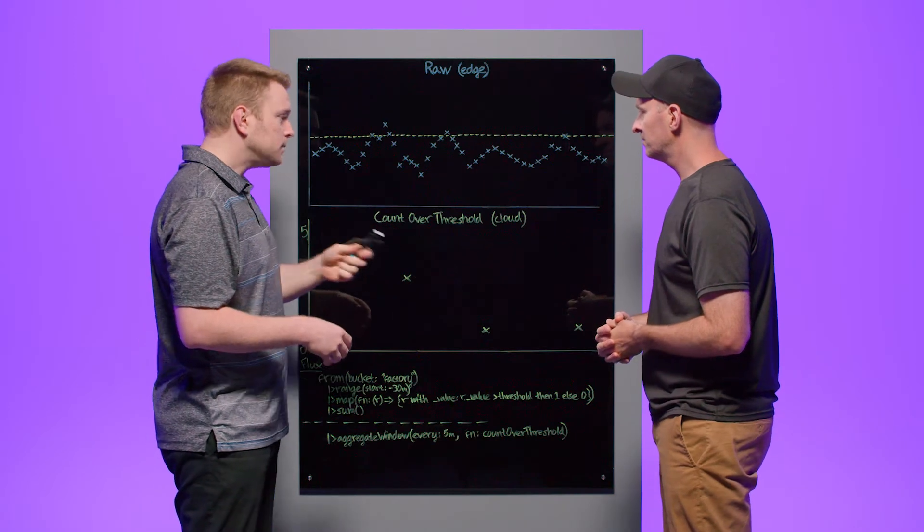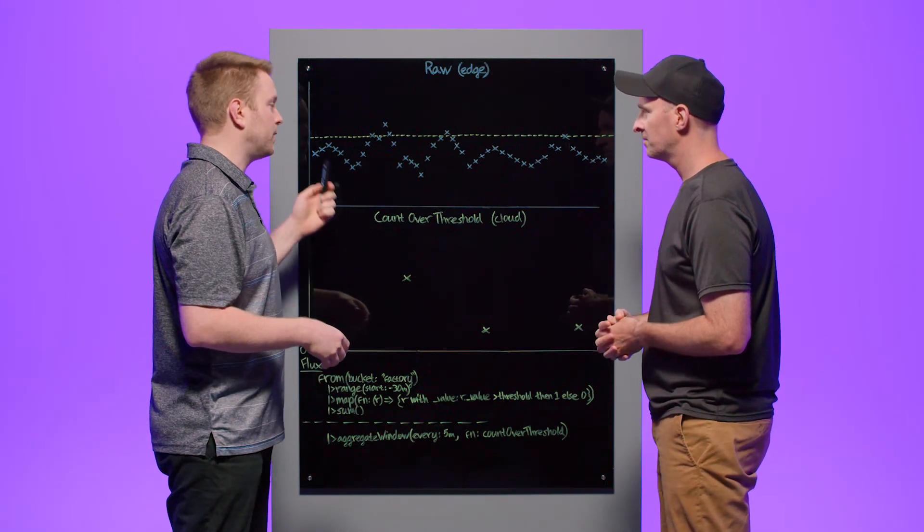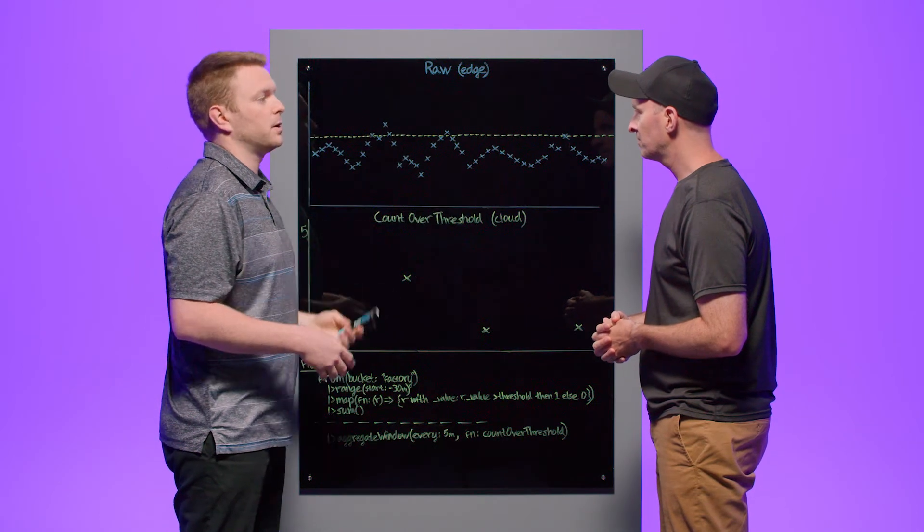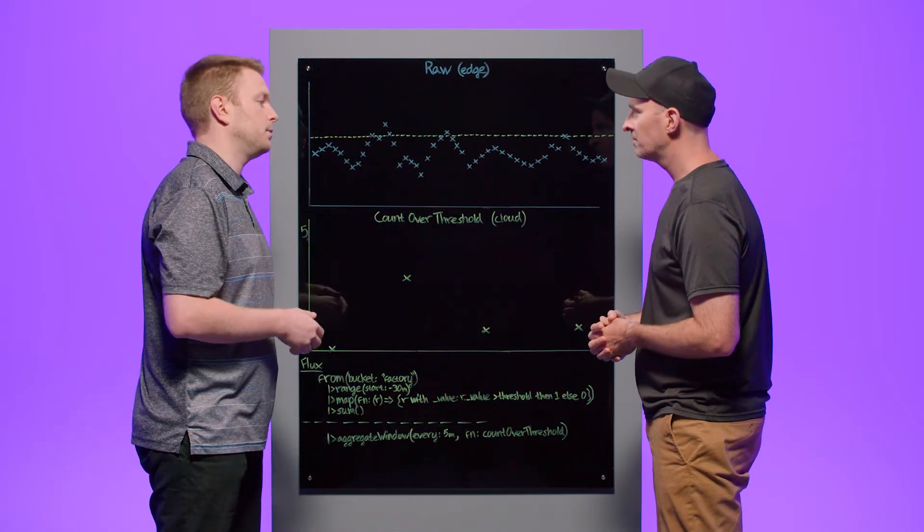But in the cloud we might not care about that and sometimes we don't care about the shape or the interesting moments at all and instead we just want to know how many interesting moments happened, right? So count over threshold is a function that you can implement in flux very easily that counts the number of times a series breaks some threshold that the user defines. It's that simple. All right. And so it looks like you have some flux code here that's explaining how to do this count over threshold. Maybe you can walk us through that and give us a little primer.